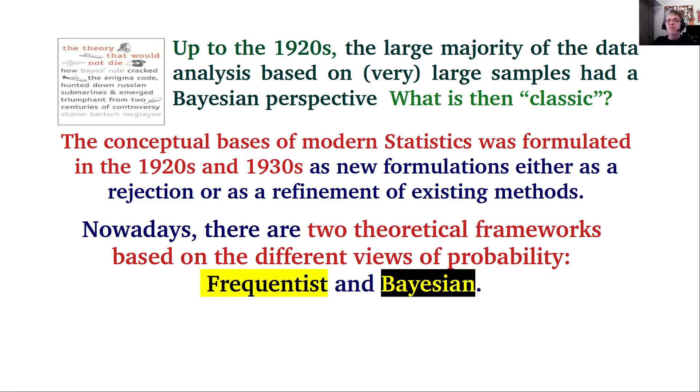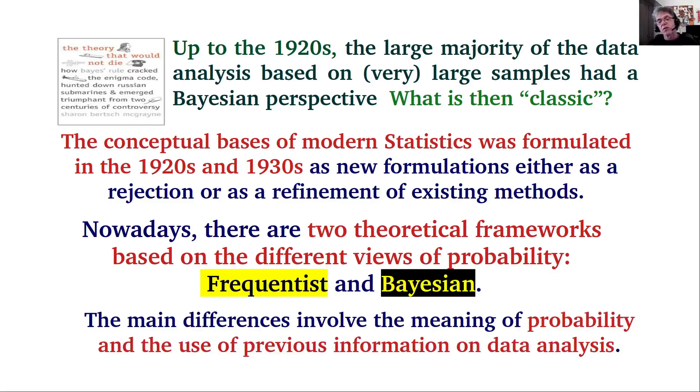Nowadays we have two theoretical frameworks, as if statistics is a schizophrenic discipline. We have frequentist statistics and Bayesian statistics. Explaining these two strands of statistics is the subject matter of my book and of this set of videos. The main difference, which we will discuss later in coming videos, between these two strands of statistics involves the meaning of probability and the use of previous information in data analysis.